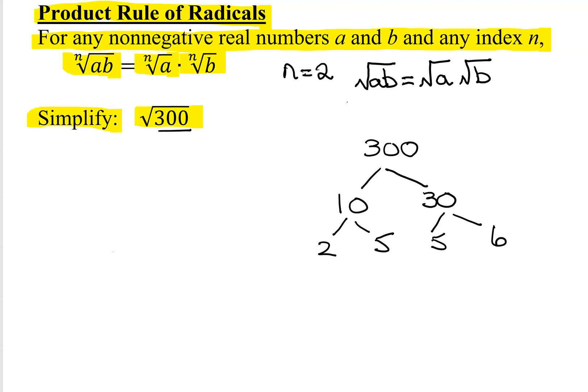10 is 2 times 5, and 30 is 5 times 6. So 2, 5, and 5 are prime factors. 6 is not a prime number, so 6 is 2 times 3. So here is my prime factorization of 300.